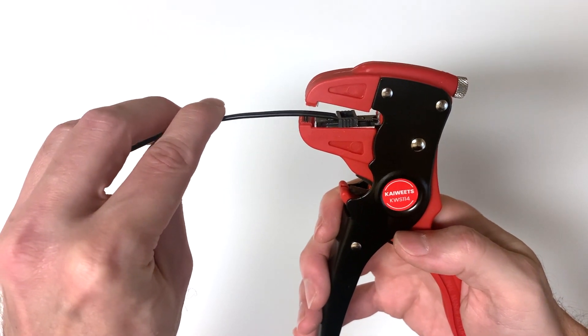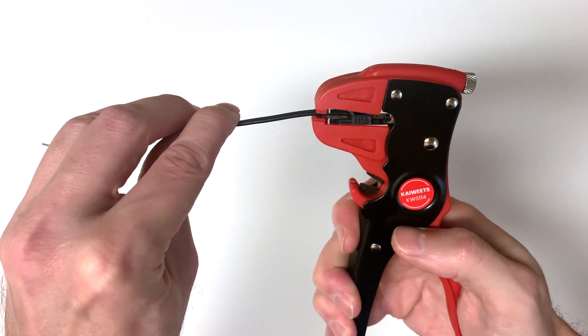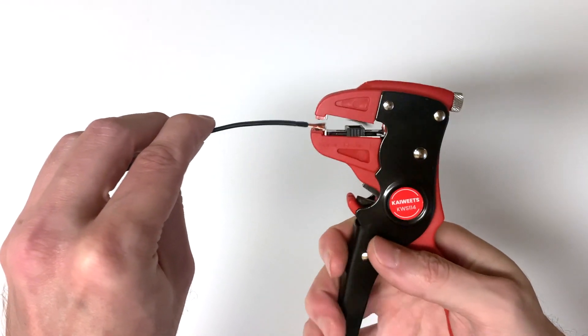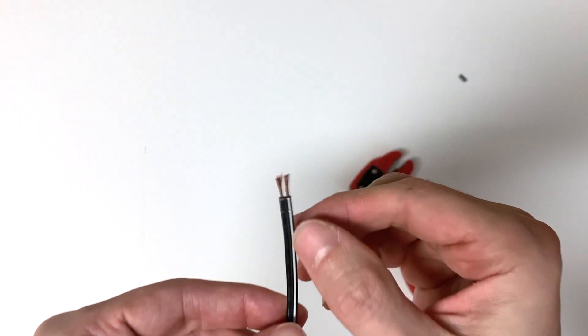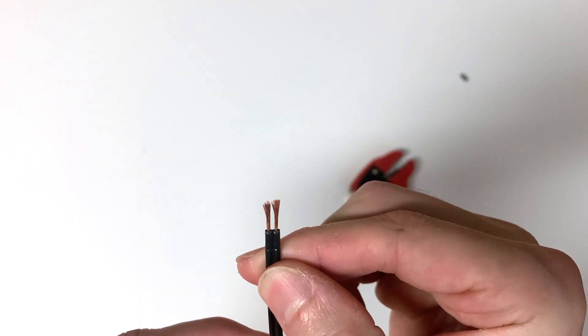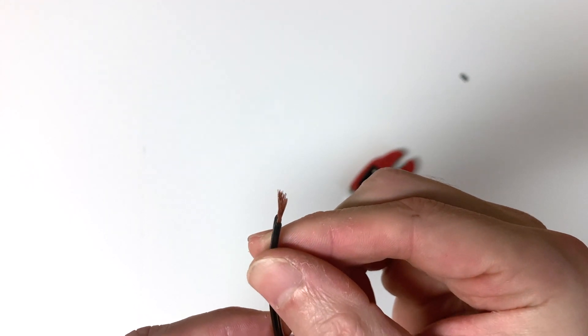So basically what I do is I just insert my wire here until it hits that stop block and then just engage the teeth and give it a quick squeeze. And then now you can see that it took off just the amount of sheathing that I was looking for and the wires are still intact and didn't cut through those and take off any material.